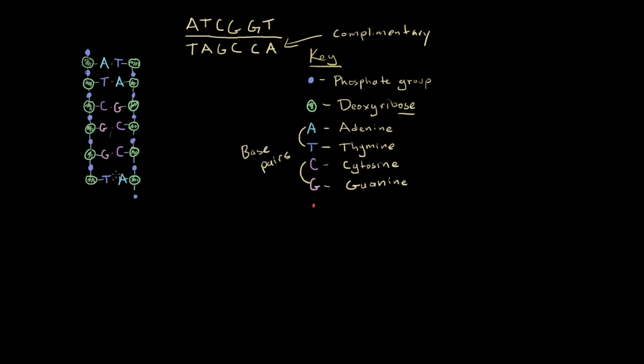One last piece of information I want to get across to you is this: one base plus one sugar plus one phosphate group gives you what's called a nucleotide. It is a name for those three structures put together.